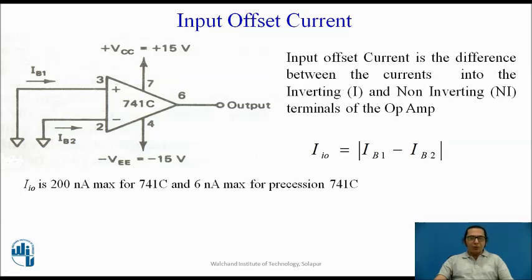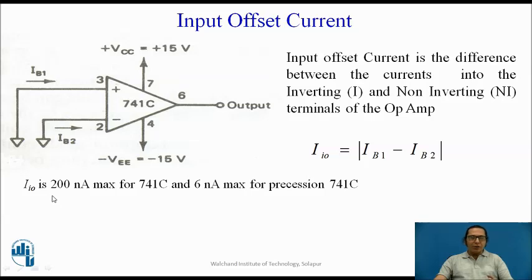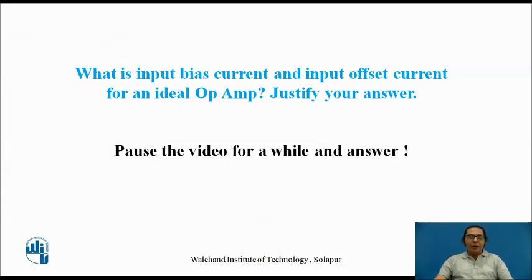The second parameter is called input offset current. IB1 and IB2 are supposed to be zero but are non-zero and unequal. The absolute difference between IB1 and IB2 is called the input offset current. It is an absolute difference because we cannot predict whether IB1 or IB2 is greater. For the 741C, the value of input offset current is 200 nanoamps, and for the precision 741C it is 6 nanoamps. You can pause the video and answer: what should the input bias current and input offset current be for an ideal Op-Amp?